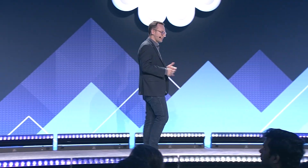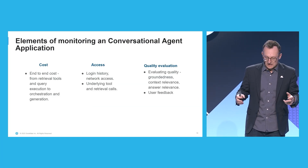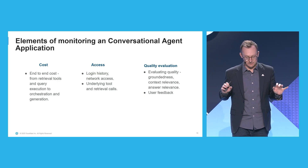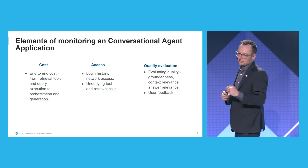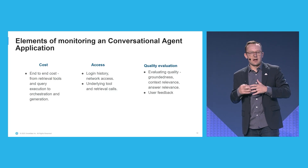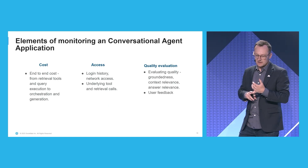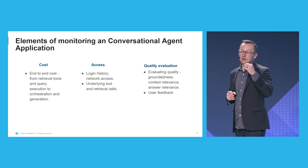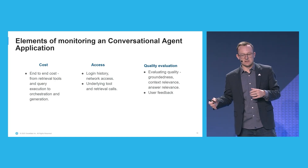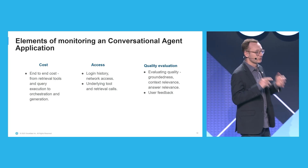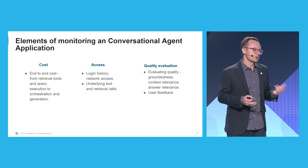Now we get to logging, monitoring, and evaluation. There are many elements to think about when monitoring a conversational application. There's cost — can you answer how much each call costs for your application? There's access — who is logging into the application, what network endpoint are they coming from, what underlying tools were called? Then there's quality evaluation — how are you evaluating quality for things like groundedness, context relevance, and answer relevance? Most importantly, how are you collecting user feedback? We're constantly working on this with customers as they move Cortex Analyst semantic models into production — monitoring the semantic model, identifying areas where user feedback shows the model isn't handling things well, and improving it.